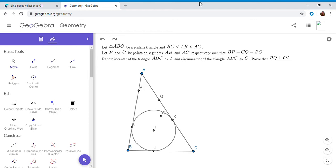So we have a scalene triangle ABC where BC is the smallest side. P and Q are points on AB and AC, so that BP and CQ are both equal to BC. So like I said, BC is the smallest side, so that makes sense.